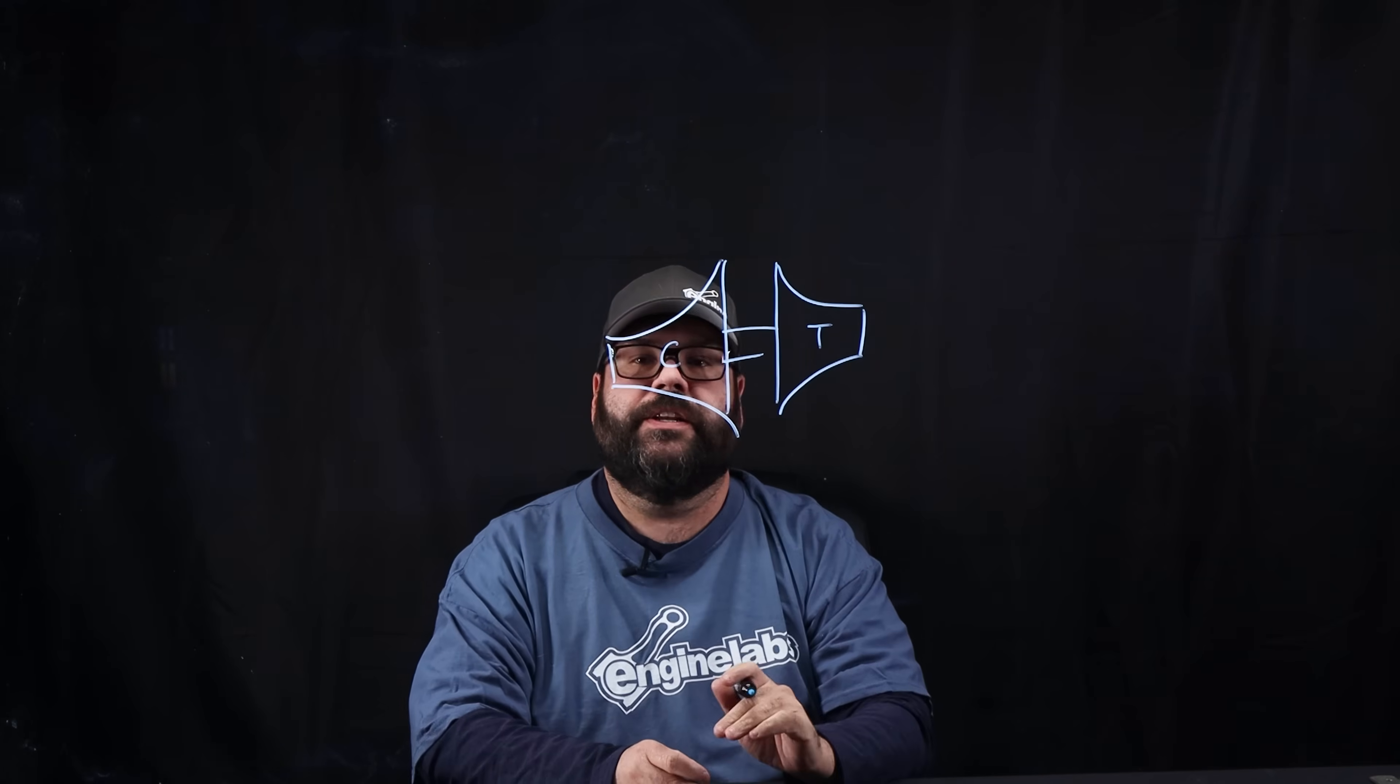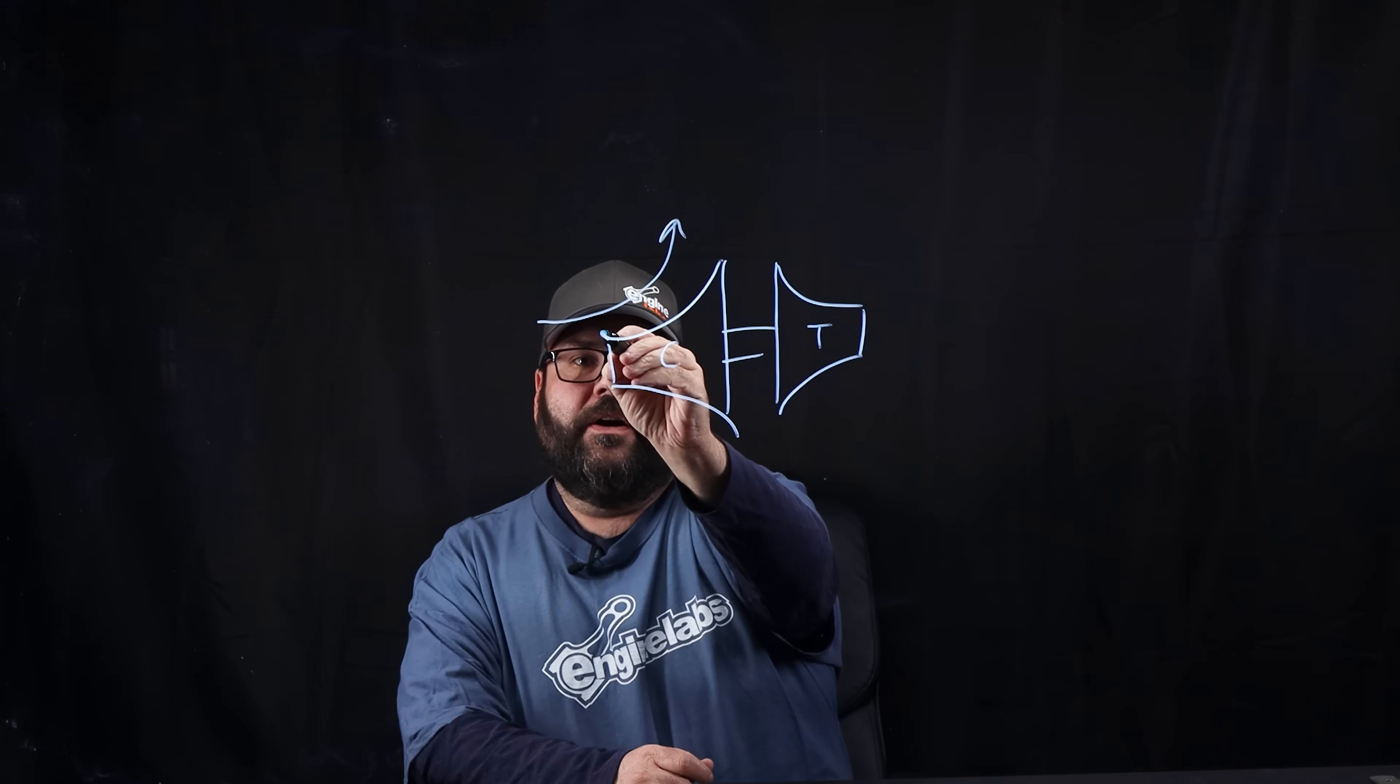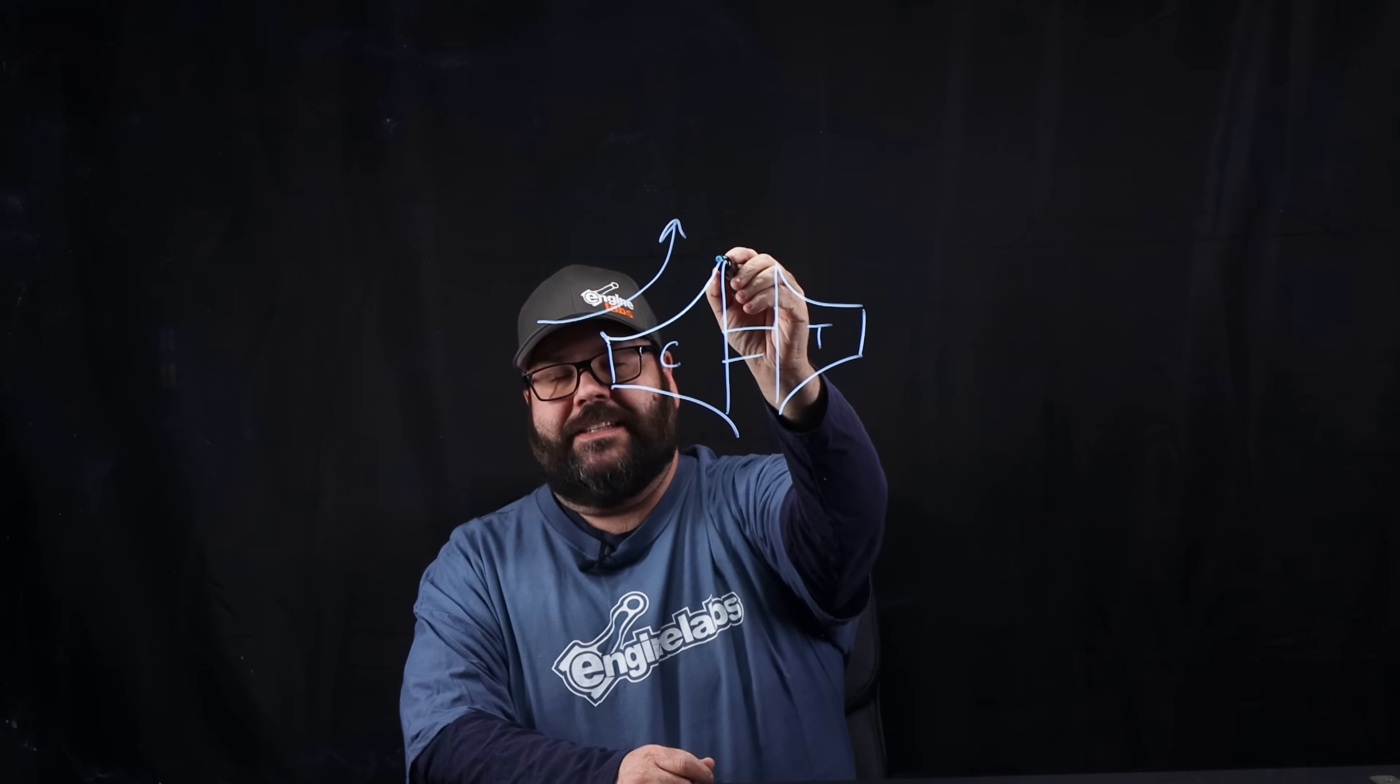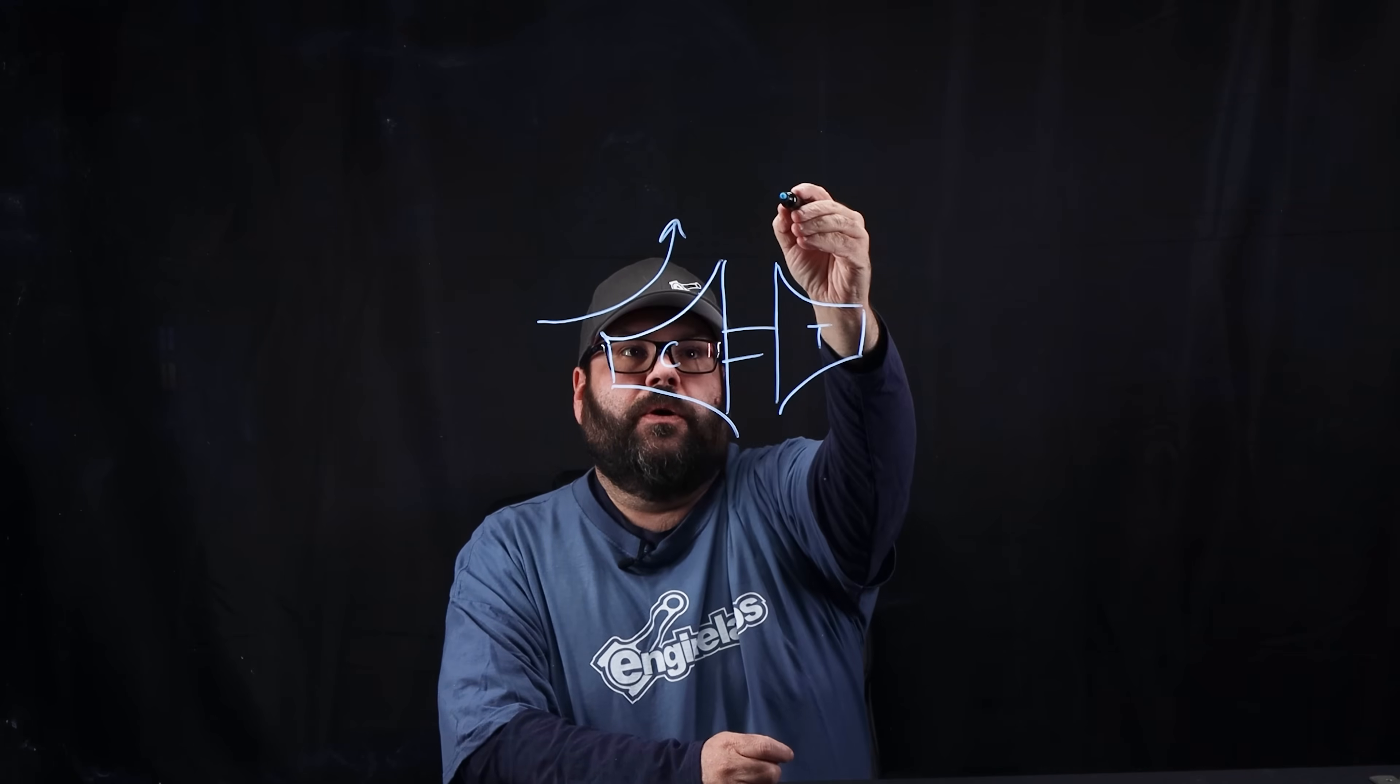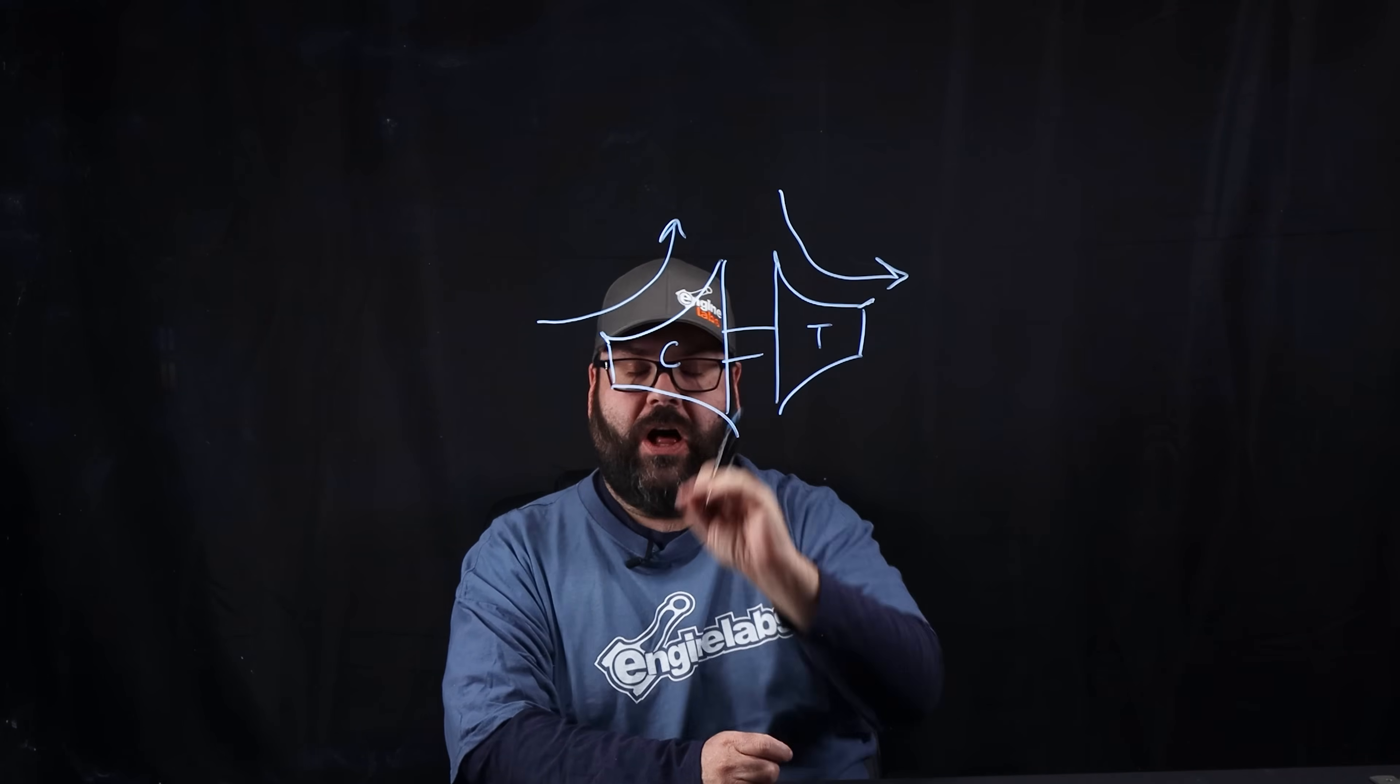So there's two terms we need to know: the inducer and the exducer. Since the airflow comes in this way, this is the first part that the air hits. That's called the inducer. Because this is the last thing the air touches, that's called the exducer on the compressor side. Now if we go into the turbine side, because the airflow goes like this, that makes this the inducer and this the exducer. So they're flopped.